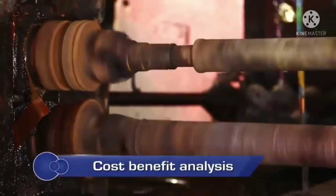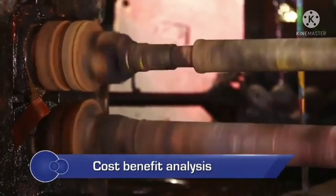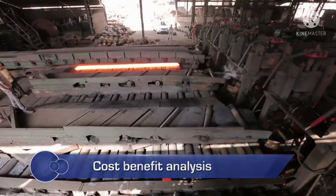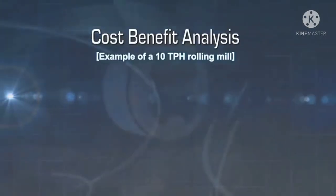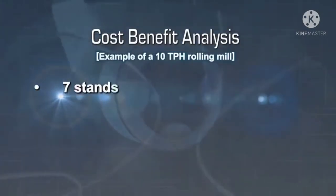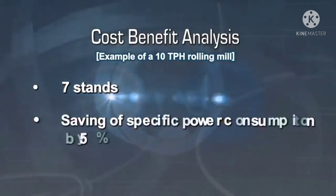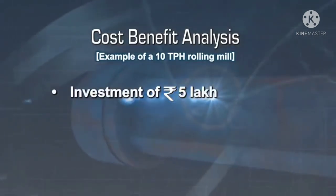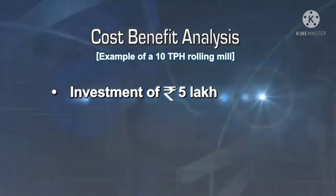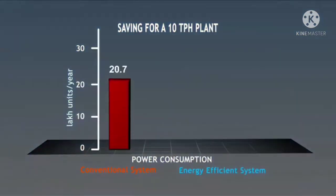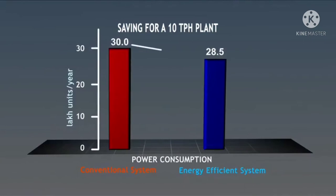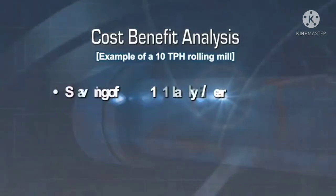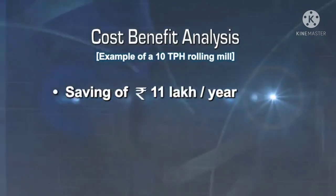To understand the economic benefit of installing universal couplings, consider a rolling mill of 10 TPH capacity. Conversion of wobbler couplings to universal couplings in 7 stands can lead to a power saving of 5%. The investment required is approximately 5 lakh rupees. This implies an annual power saving of around 1.5 lakh units of electricity, leading to a cost saving of 11 lakh rupees per annum.